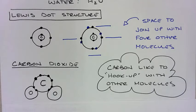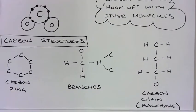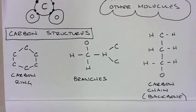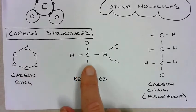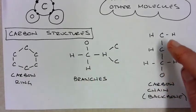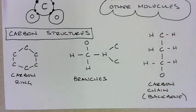What's also interesting about carbon is that its structure varies. Carbon can be found in carbon rings such as this, in branching patterns, and it can also be in a carbon chain where it has a backbone of carbon. These are different structures related to carbon.